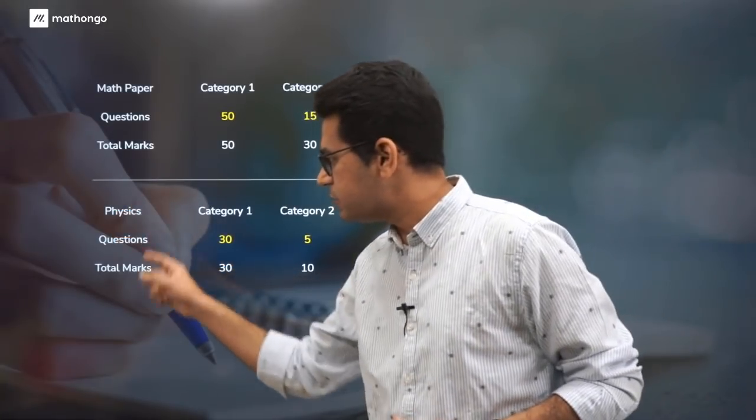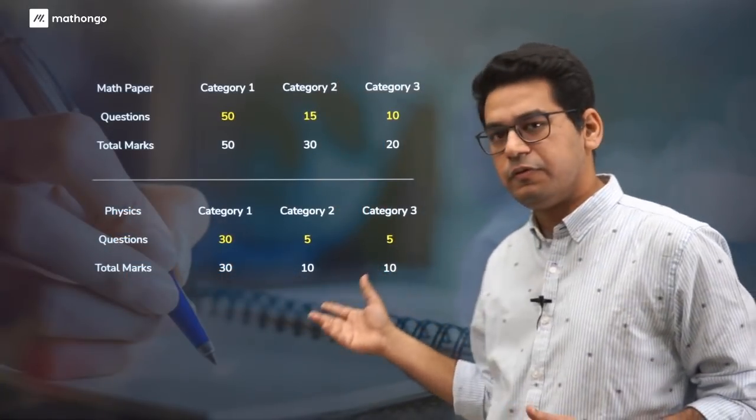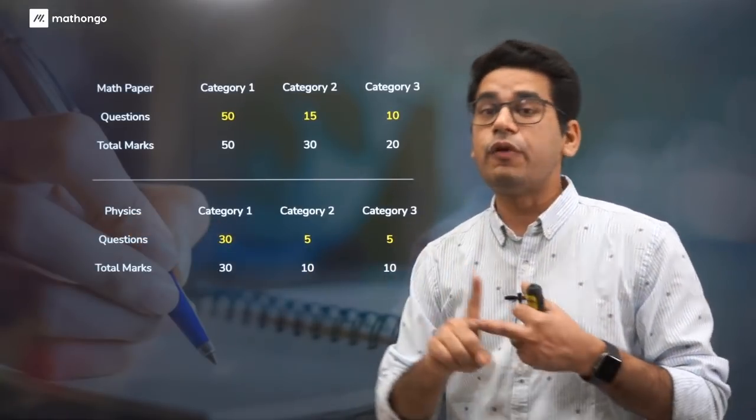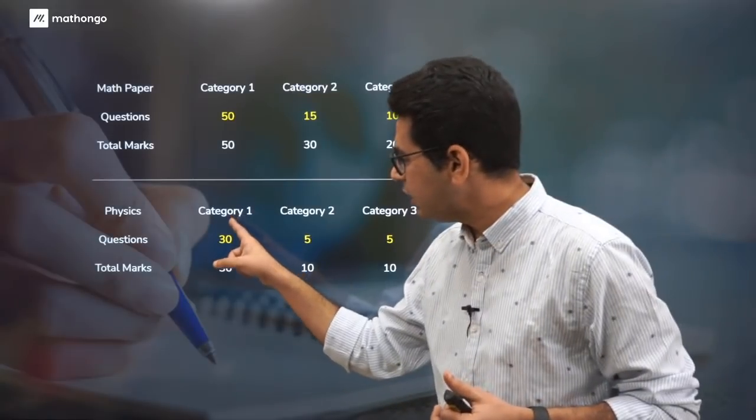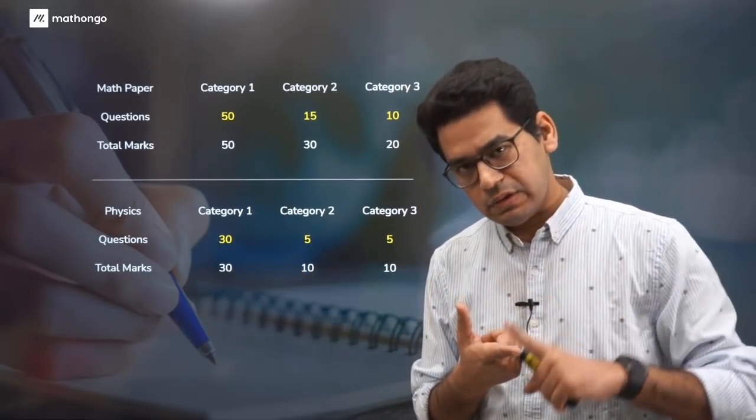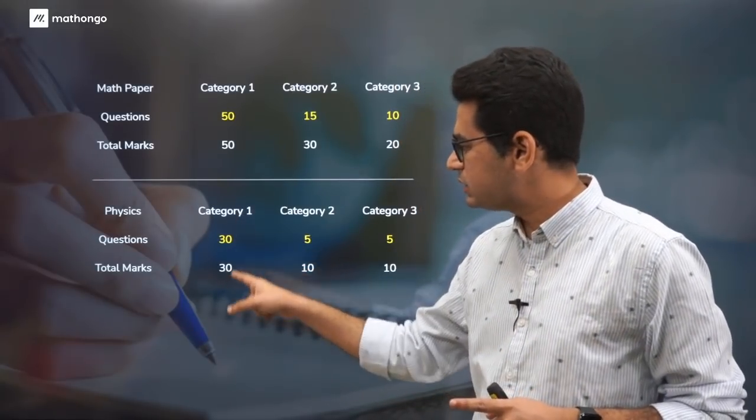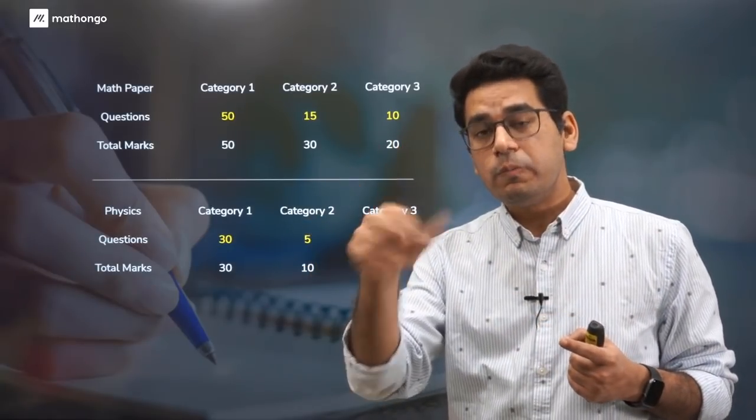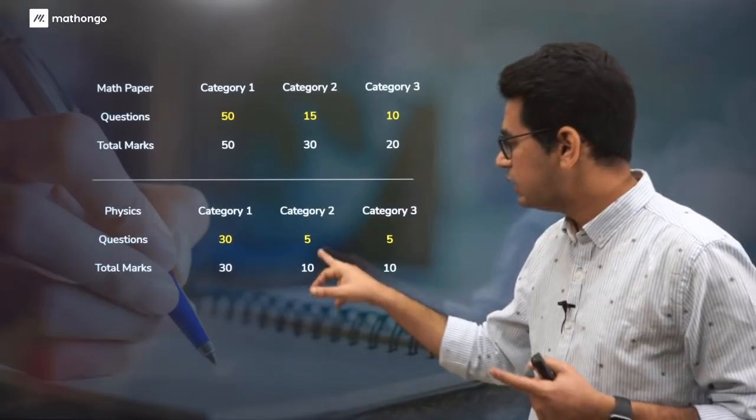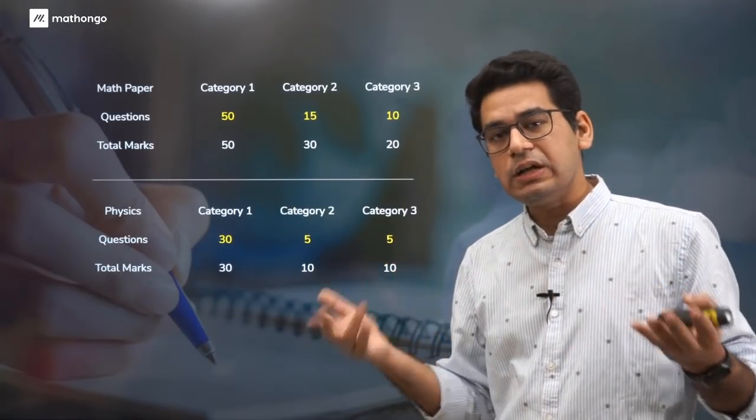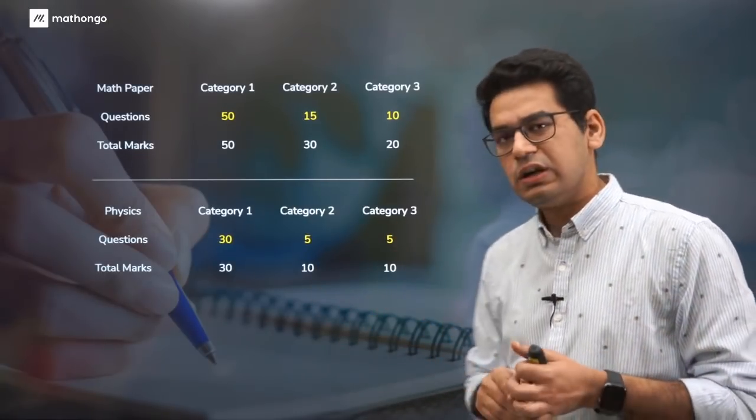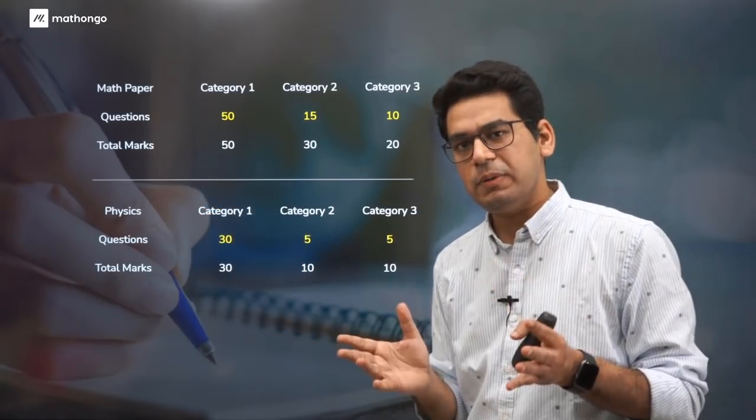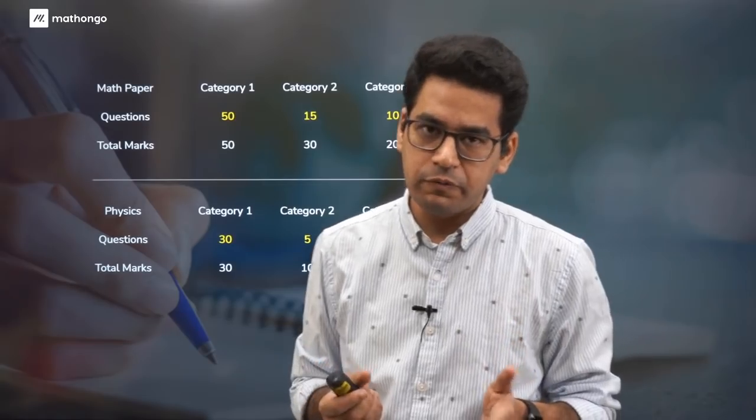How is the division done? In the math paper, out of 75 total questions, 50 are in Category 1, that's 50 marks. 15 questions are of Category 2, that's 30 marks. And there are 10 questions of Category 3, that's 20 marks. This is the total weightage which leads up to 100. Similarly for physics and chemistry, there will be 40 questions of physics and 40 questions of chemistry.